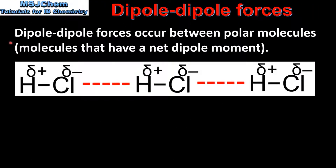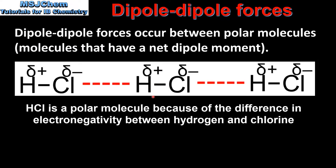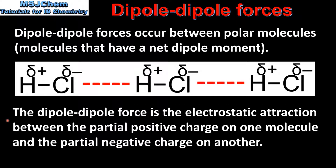The next type of intermolecular force is dipole-dipole forces. Dipole-dipole forces occur between polar molecules, that is molecules that have a net dipole moment. HCl, which is hydrogen chloride, is a polar molecule. The chlorine atom has a partial negative charge and the hydrogen atom has a partial positive charge. The dipole-dipole force is the electrostatic attraction between the partial positive charge on one molecule and the partial negative charge on another. So to summarize, dipole-dipole forces occur between polar molecules. However, it's important to remember that polar molecules also have London dispersion forces.